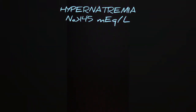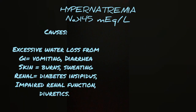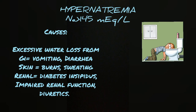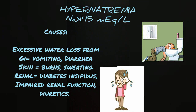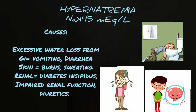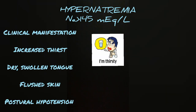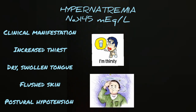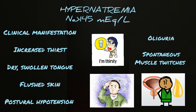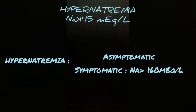Next is hypernatremia, which is a sodium concentration greater than 145 mEq/L. This is most commonly caused by excessive water loss through the gastrointestinal tract due to vomiting or diarrhea. Water loss could also occur through the skin by burns or sweating, or through the kidneys in diabetes insipidus, impaired renal function, or diuretic therapy. Hypernatremia can also be caused by decreased water intake, increased sodium intake, sodium administration through IV fluids, or hyperaldosteronism where sodium absorption is increased. Clinical signs include increased thirst, dry mouth and tongue, flushed skin, postural hypotension due to decreased volume, oliguria, and spontaneous muscle twitches. These symptoms typically occur at sodium levels greater than 160 mEq/L.